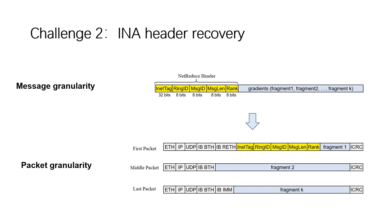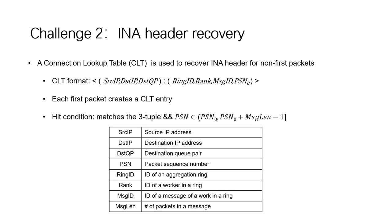The second challenge is INA header recovery. Since we cannot access the transport layer header directly, we can only concatenate our customized INA header onto the gradient at the message granularity. After packetization, only the first packet would contain the INA header. Therefore, we need a recovery mechanism in the switch for non-first packets. We use a connection lookup table (CLT) for this. Every packet has a sequence number in the transport layer to indicate ordering. The basic idea is to use this information to link non-first packets to their corresponding first packets.